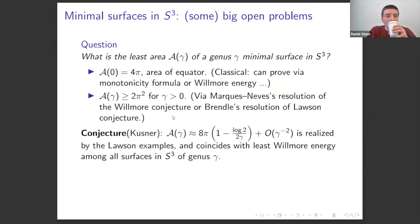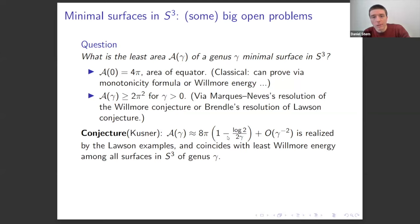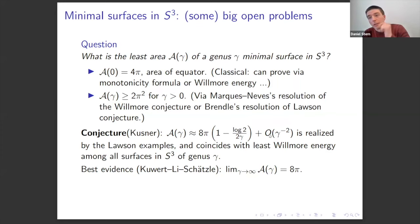It's a conjecture of Rob Kusner that for any genus, the least area is realized by the least area Lawson surface of that genus, which by computations of Heller, Heller, and Traizet has a known expansion — and moreover these minimize Willmore energy for that genus. The best evidence is by Karpukhin and Stern (via Kusner-Schultze), who show the limit of the least area as genus goes to infinity is 8π.